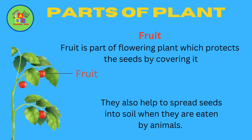Fruit is part of a flowering plant which protects the seeds by covering it. They also help to spread seeds into soil when they are eaten by animals.